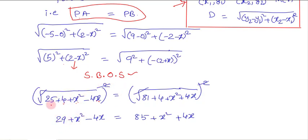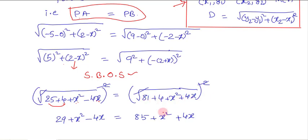After calculation, 25 plus 4 gives 29. So we get: 29 plus x squared minus 4x equals 81 plus 4 plus x squared plus 4x, which simplifies to 29 plus x squared minus 4x equals 85 plus x squared plus 4x.